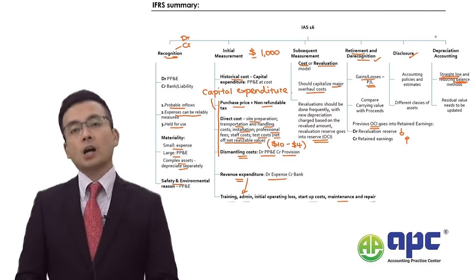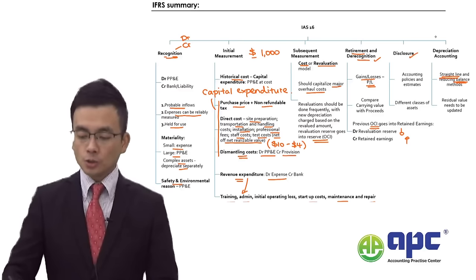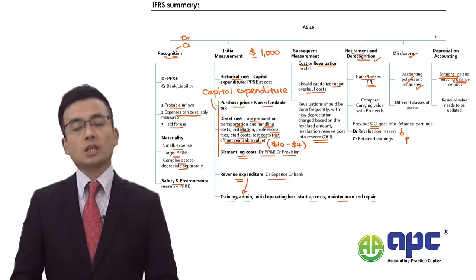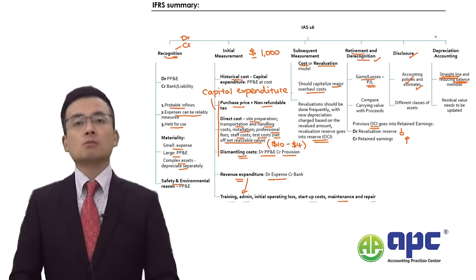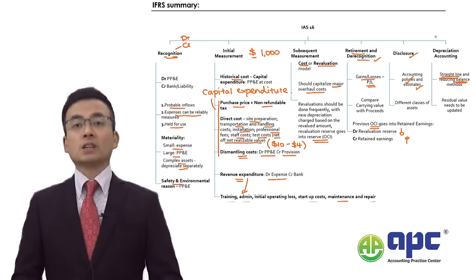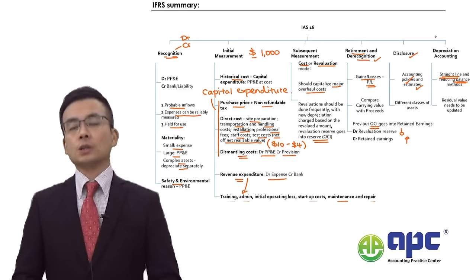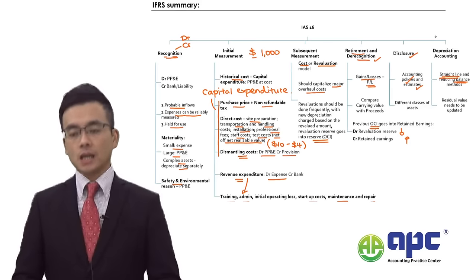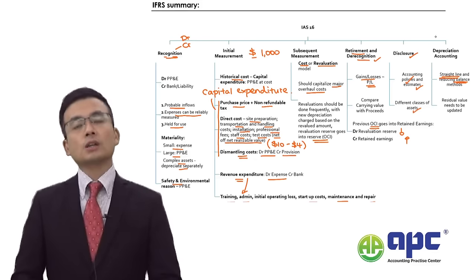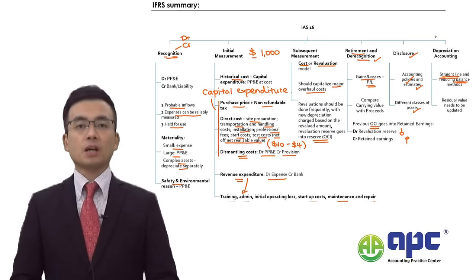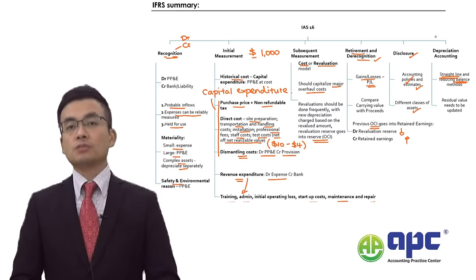This ensures the previous revaluation reserve accounts for the real return to the business once the PP&E item is disposed of, and does not affect dividends paid to shareholders. Disclosure requirements under IAS 16 require you to disclose accounting policies — for example, whether you use the cost model or revaluation model — and accounting estimates relating to depreciation.